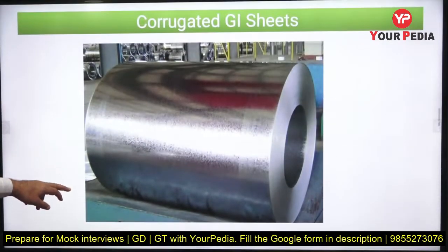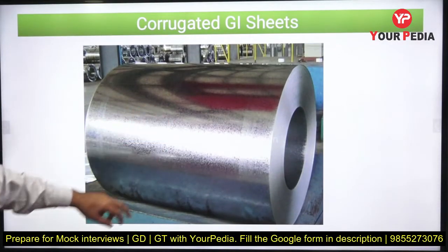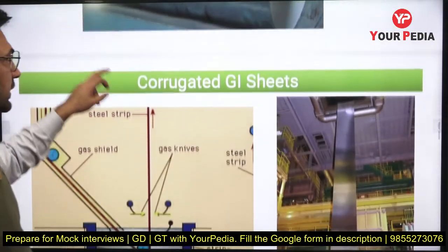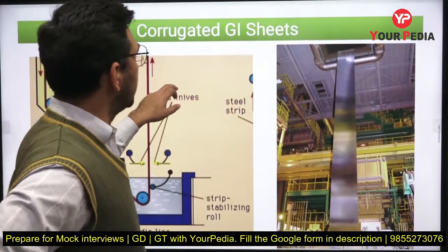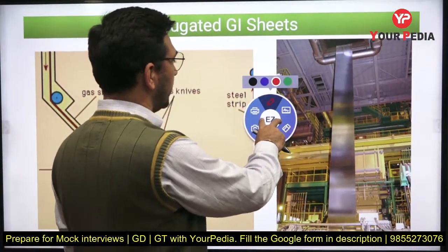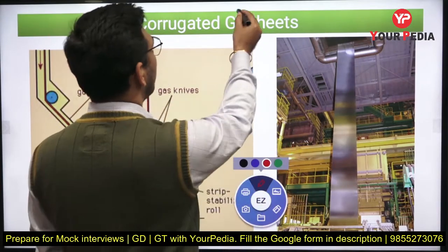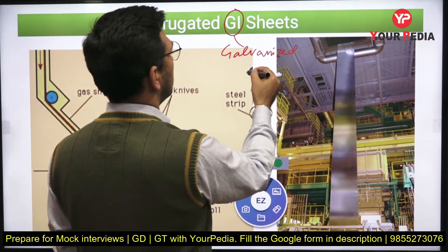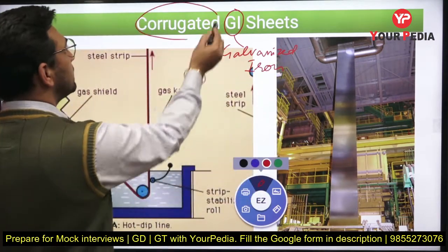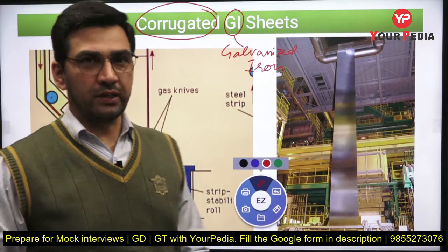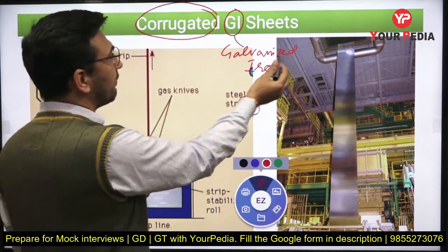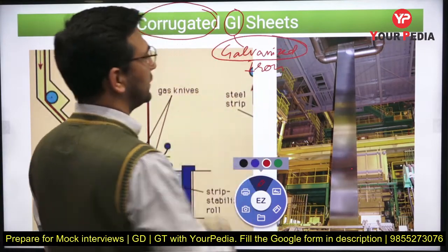How are they produced? First you need to understand that you start with a coil. When talking about corrugated GI sheets, GI stands for galvanized iron. Corrugated means a particular distorted shape that has been produced from a plane sheet, and that sheet has been galvanized.